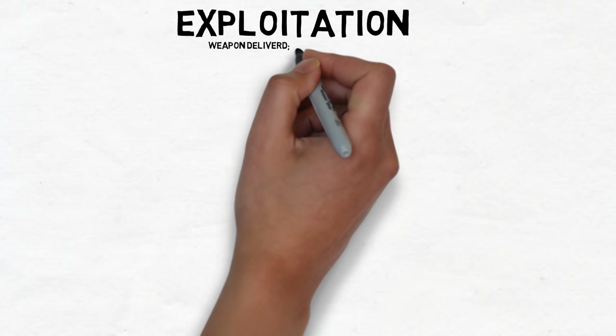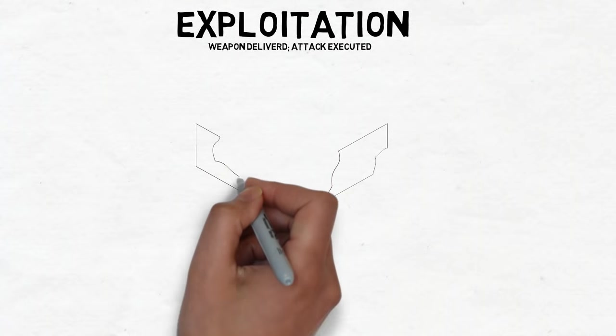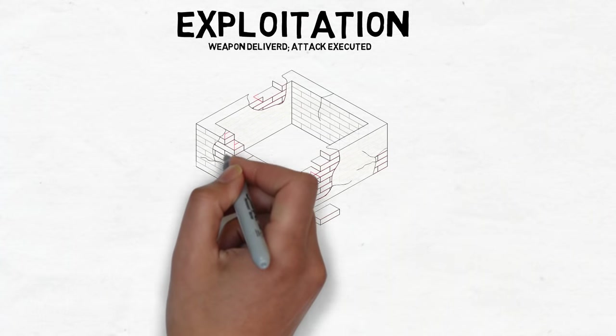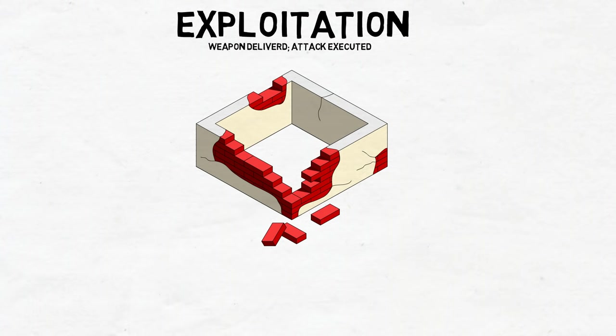Exploitation. During the exploitation stage, the attacker has effectively delivered the weapon of choice to the victim and the attack has been executed. This means we have failed to keep the weapon out of our environment and the only thing left for the attacker to do is pull the trigger.